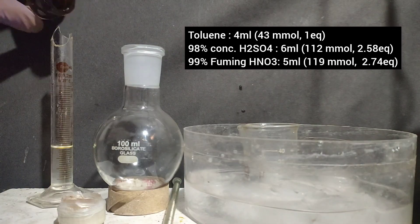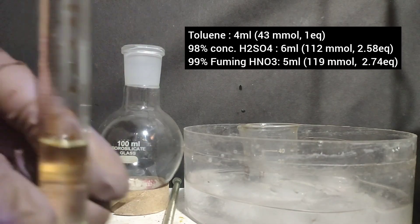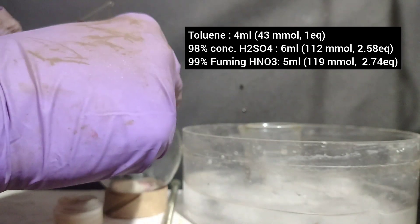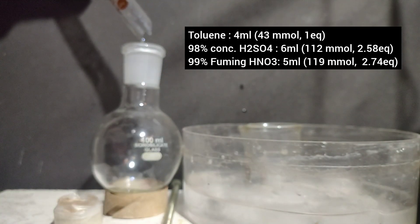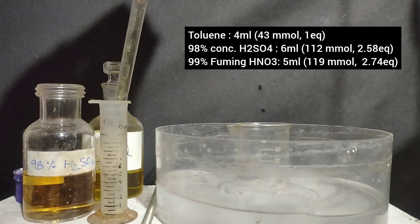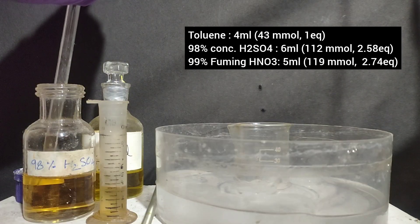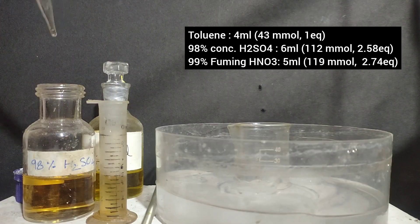Now to start things off, I will take 4 ml of toluene in a 100 ml RB flask. I had around 20 ml of toluene but it had evaporated over time and now I was left with only 4 ml.